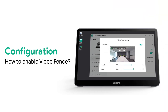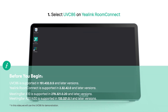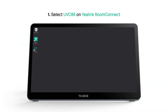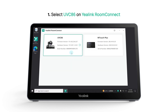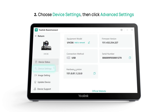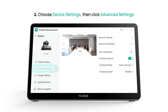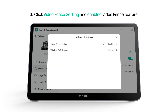How to enable the video fence feature? Before you begin, please confirm that the device has been updated to the version supported by video fence. Select UVC 86 on Yealink RoomConnect. Choose device settings, then click advanced settings. Click video fence setting and enable the video fence feature.